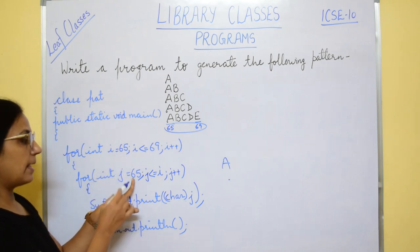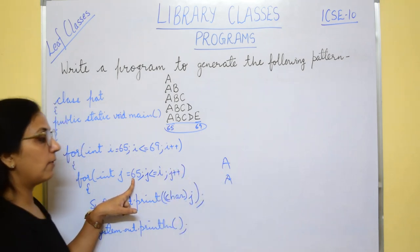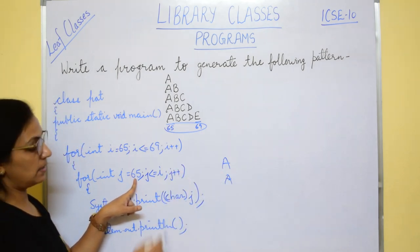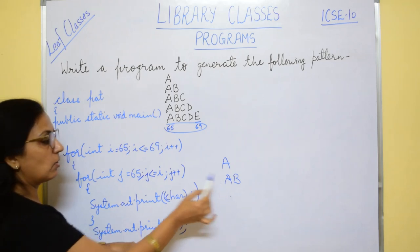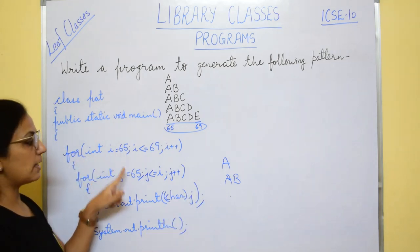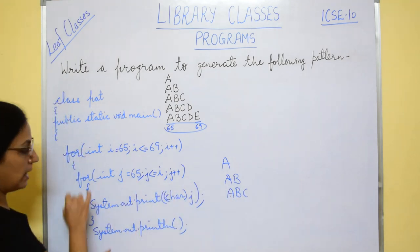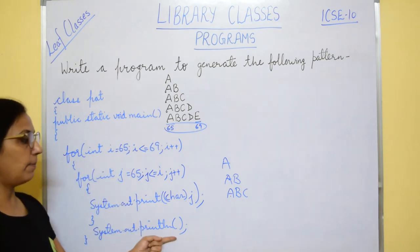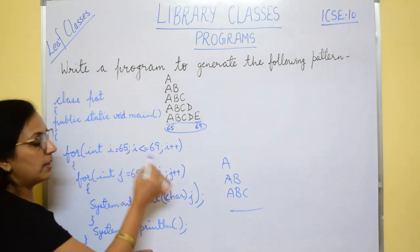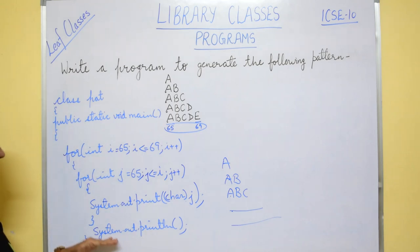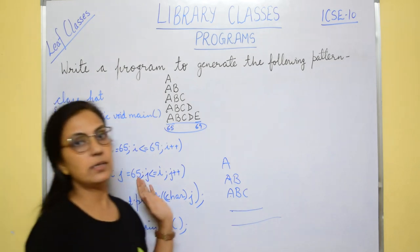When i is 66, j goes from 65 to 66: (char)65 prints A, (char)66 prints B, then println takes you to the next line. When i is 67, j goes 65 to 67 printing A, B, C. For i=68 it prints A, B, C, D, and for i=69 it prints A, B, C, D, E. The nested loop is over, then you close main and close the class. Very simple and easy — please go through the nested looping programs.